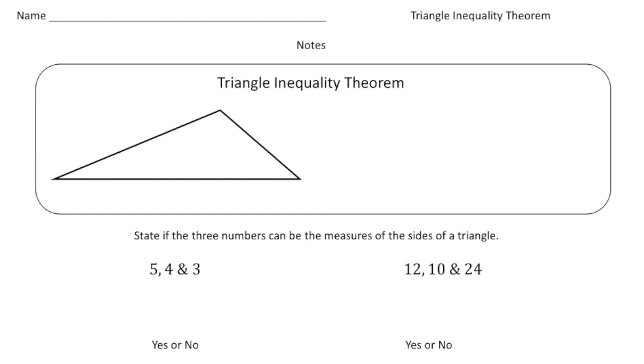So what exactly is the Triangle Inequality Theorem? Well, basically it's a rule for all triangles, and the rule states that the sum of the lengths of any two sides of a triangle has to be greater than the length of the third side.